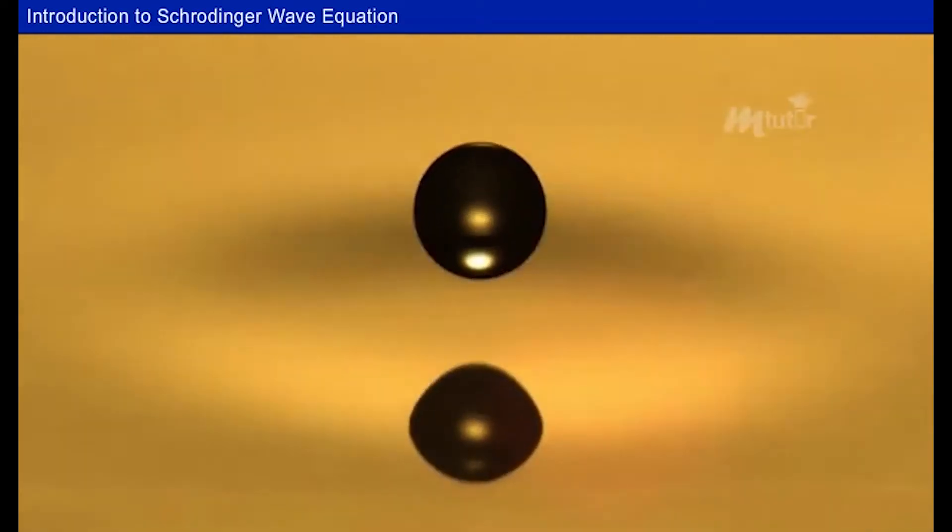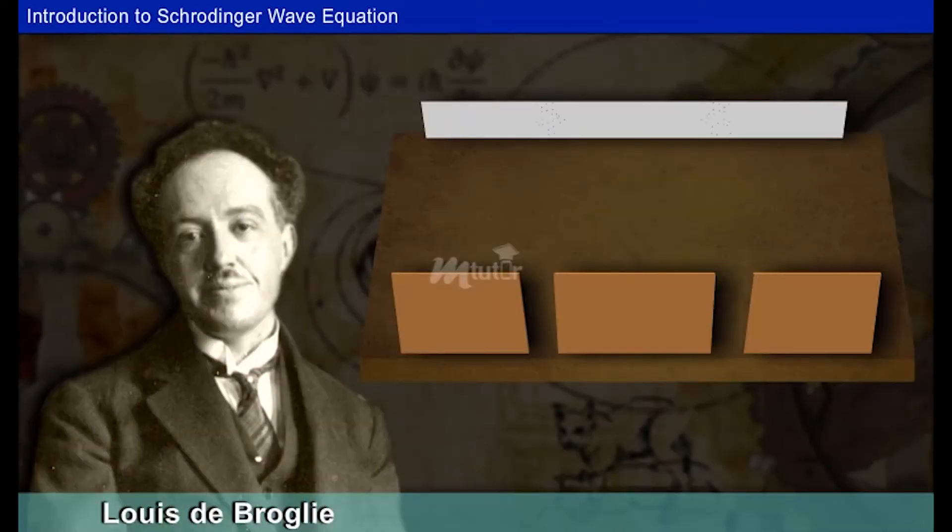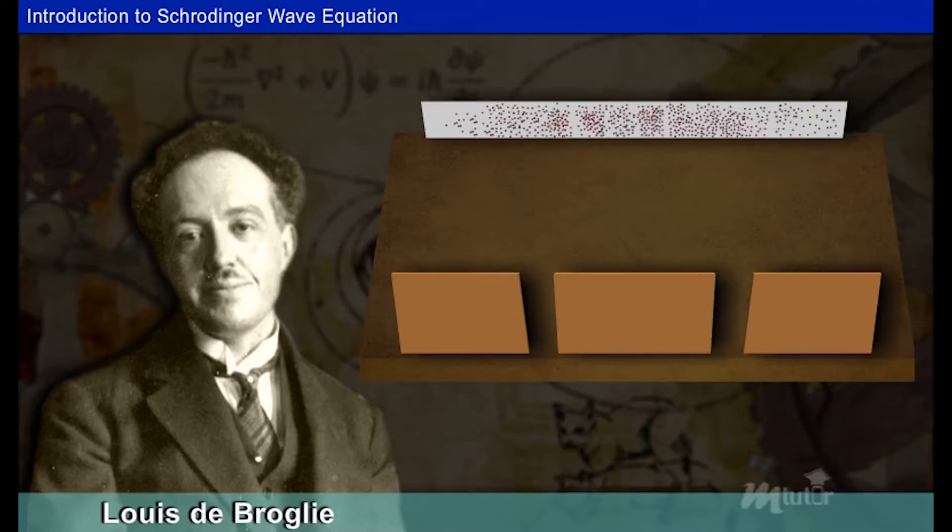And when these droplets are passed through a slit, they form an interference pattern. When an electron is passed rather than behaving like a particle and ending up in two clumps behind the slit, it produces an interference pattern. As suggested by de Broglie, an electron behaves as a particle and as a wave.